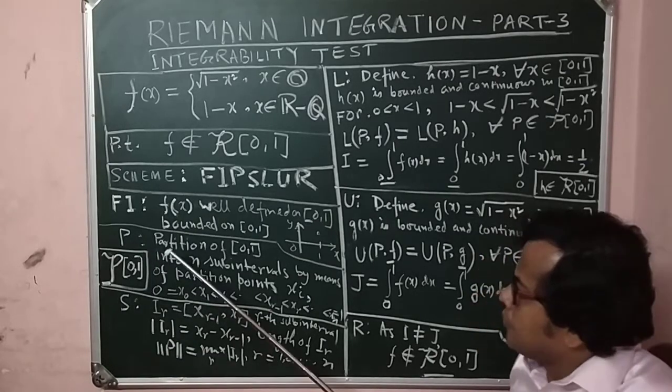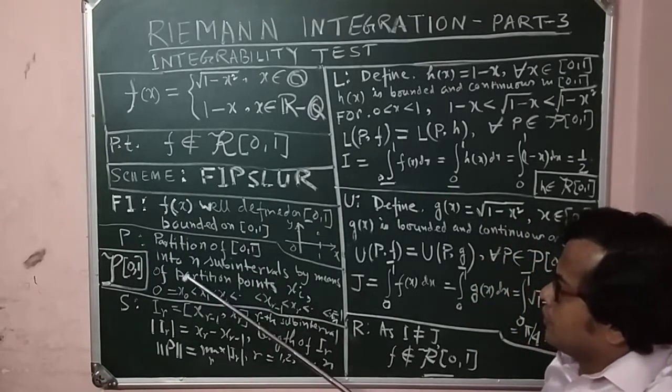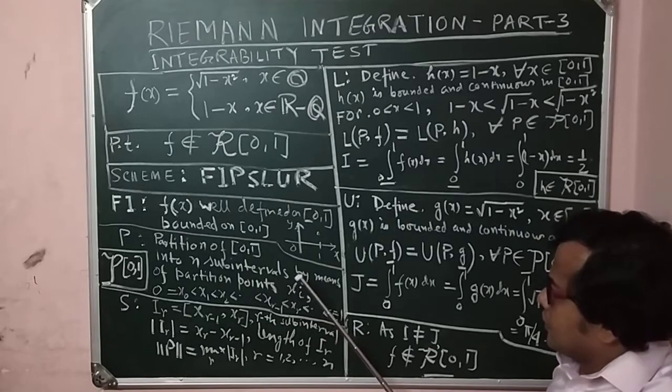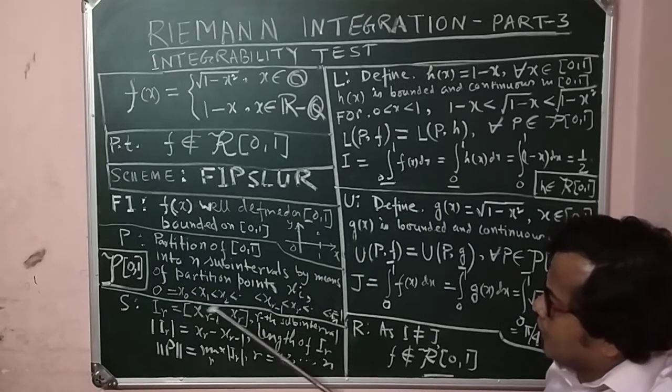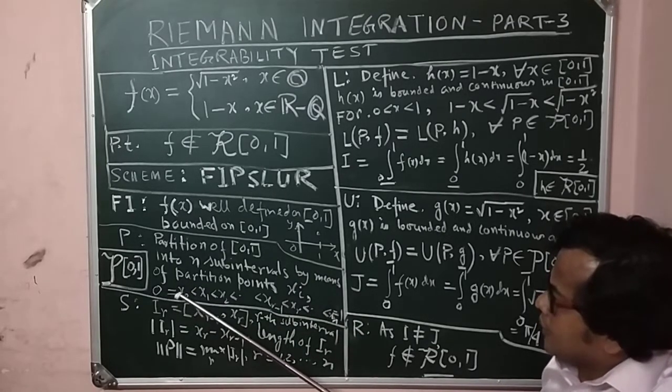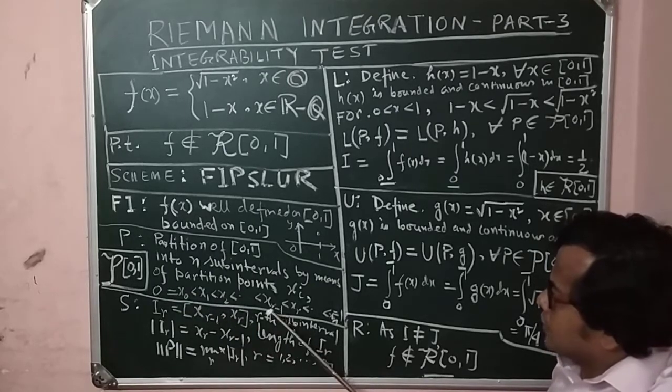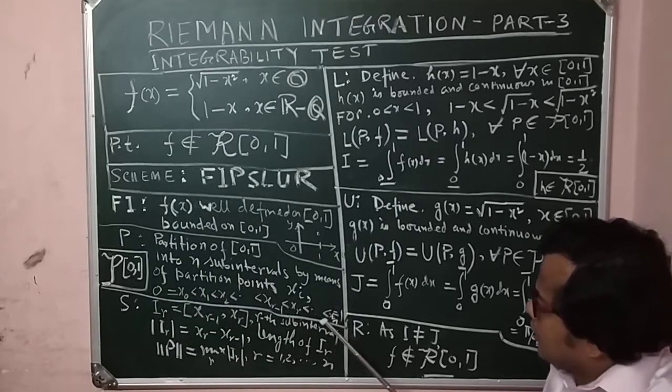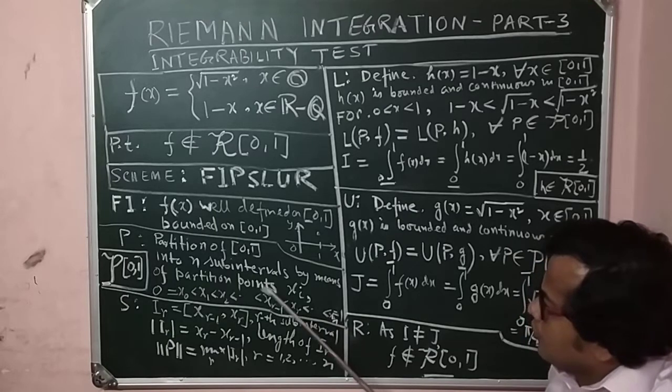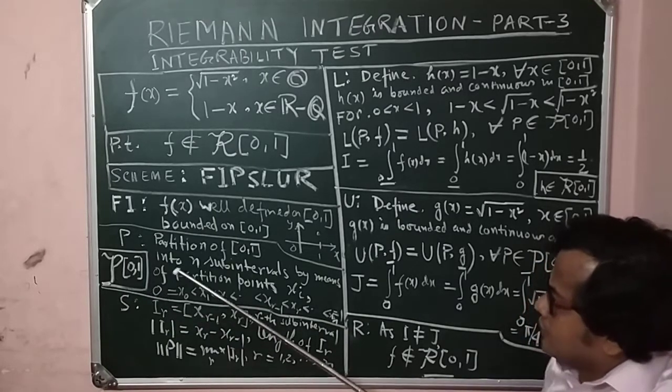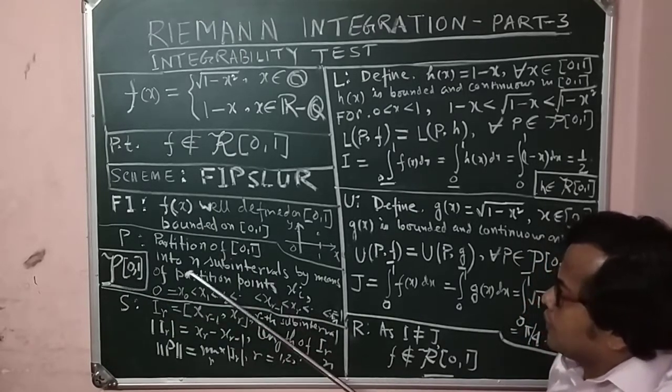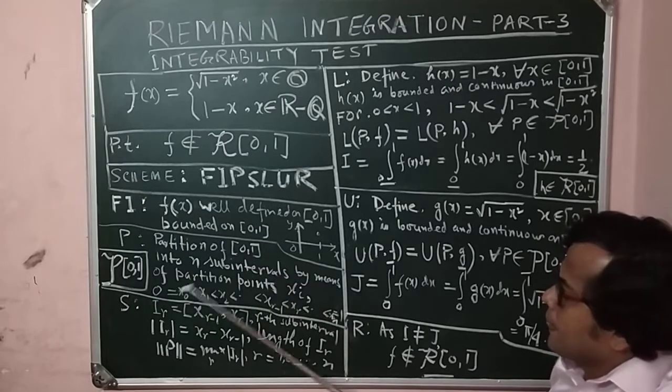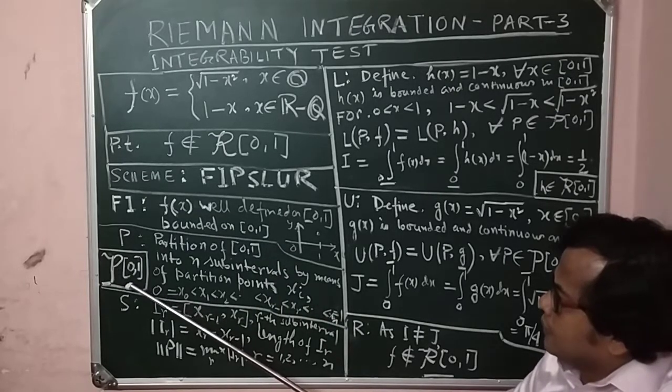P is the partition of [0,1] into n sub-intervals by means of partition points x_i, where x_0, x_1, x_2, x_3, ..., x_{r-1}, x_r, ..., x_n = 1. We denote the set of all partitions into n sub-intervals of [0,1] by script P[0,1].